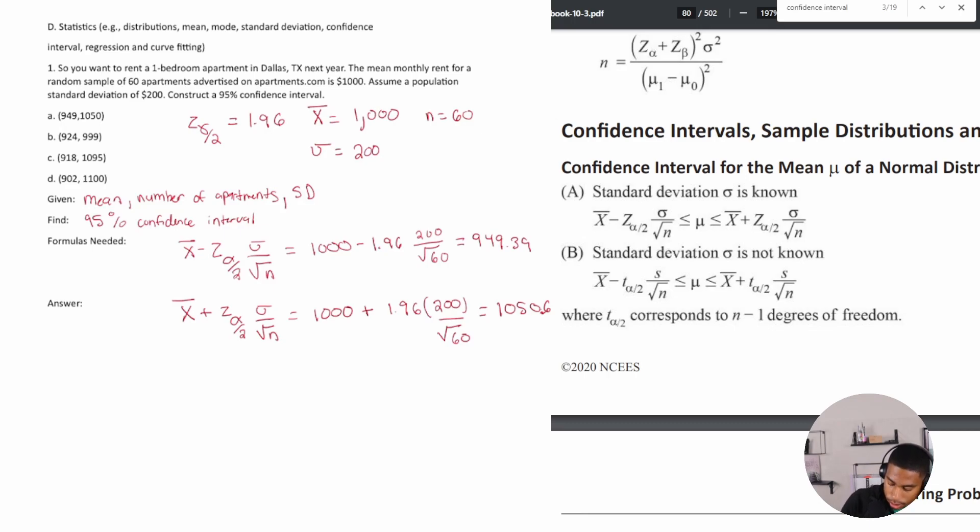For time saving purposes, if you get one of the bounds and it matches up, then you don't have to solve for that upper bound. Because if we would have saw that it was 949, we could have got rid of B, C, and D from this.